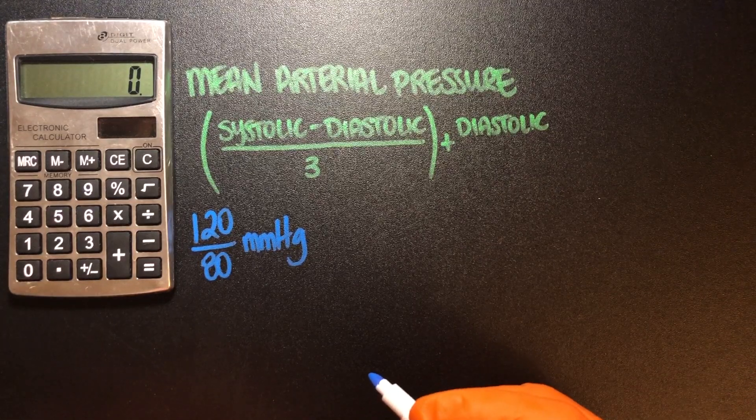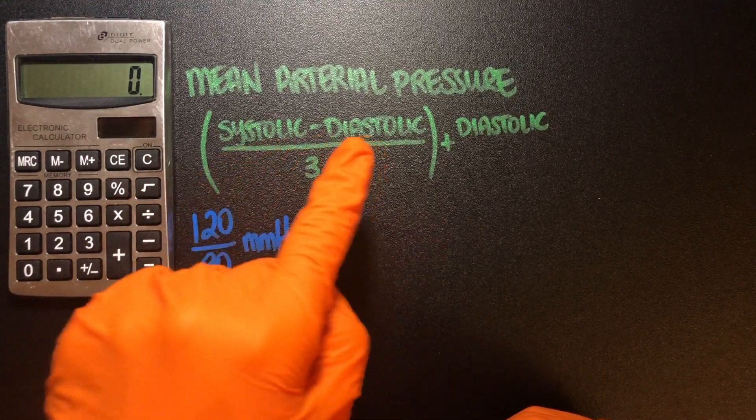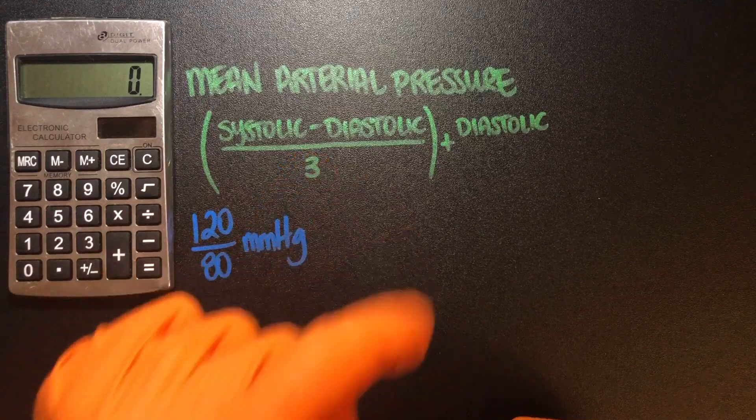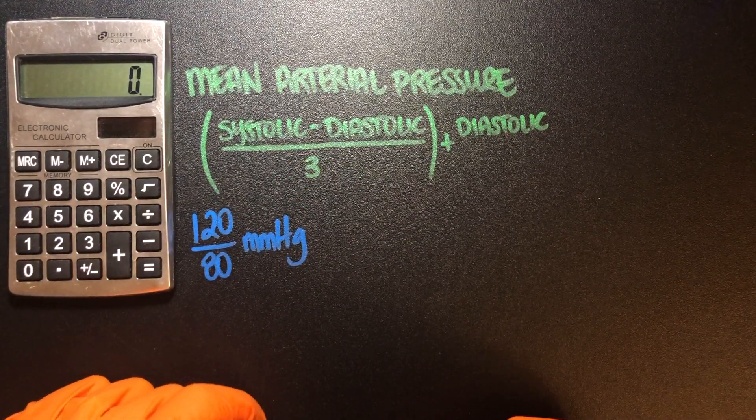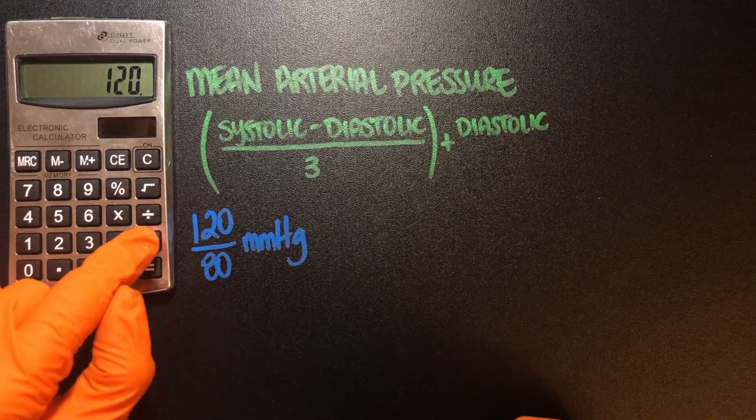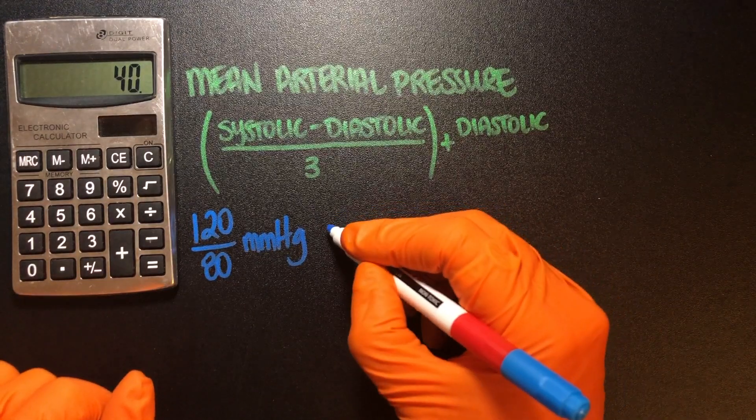What you'll do is you will take systolic minus diastolic and maybe that sounds familiar. The reason why it's familiar is because that is pulse pressure. So if we were to do 120 minus 80, that gives us 40.